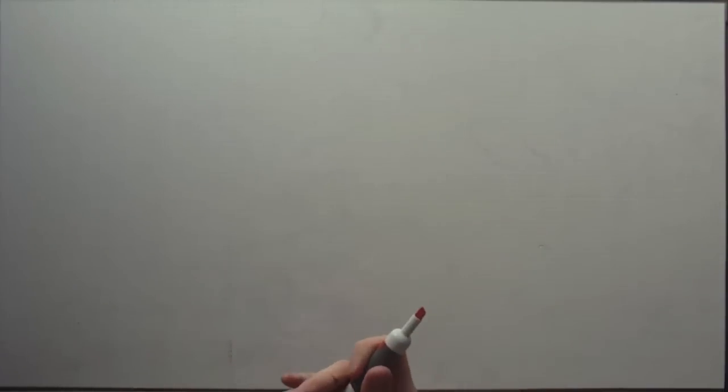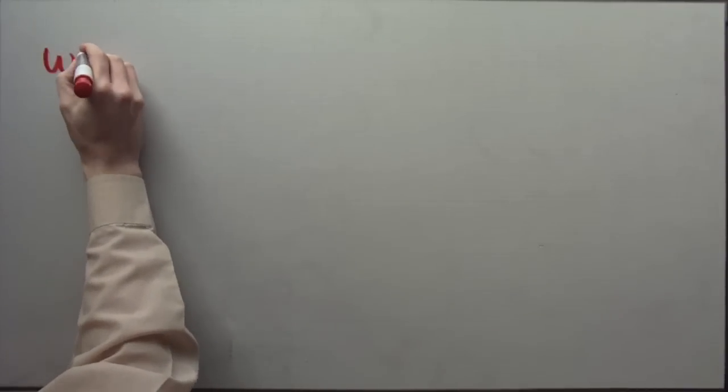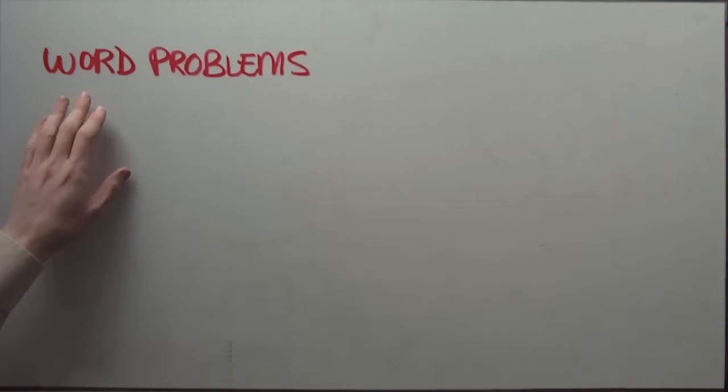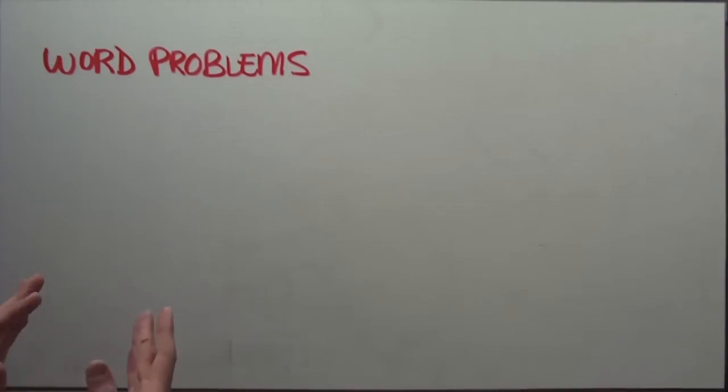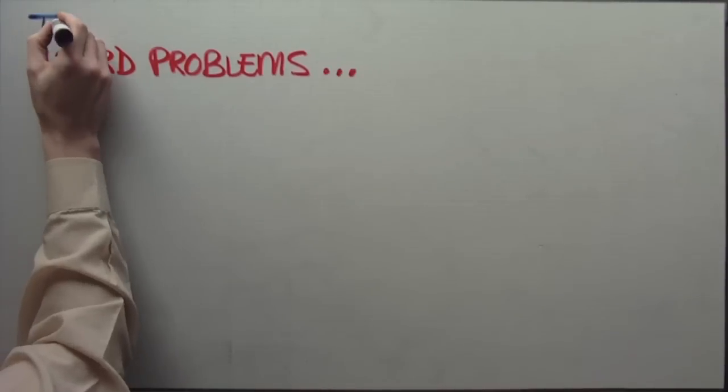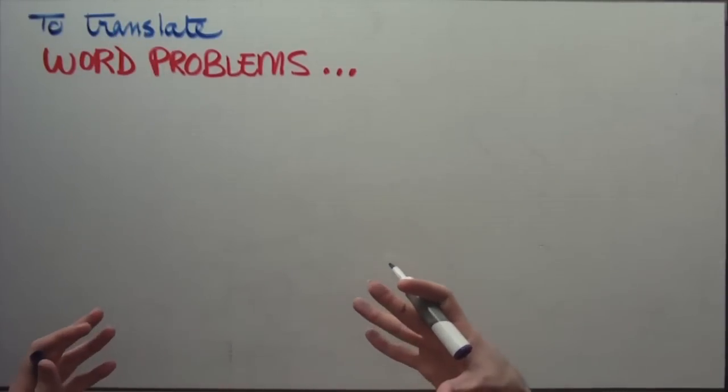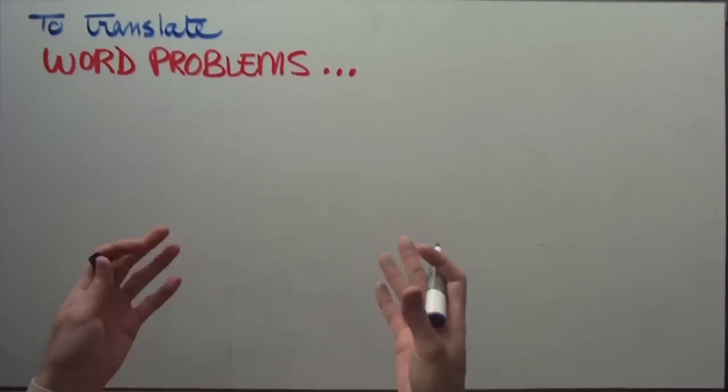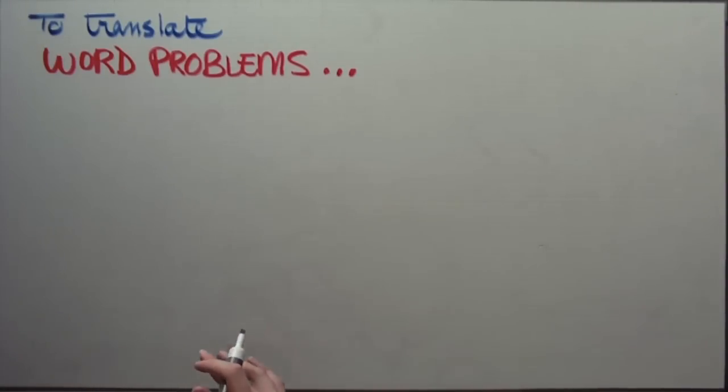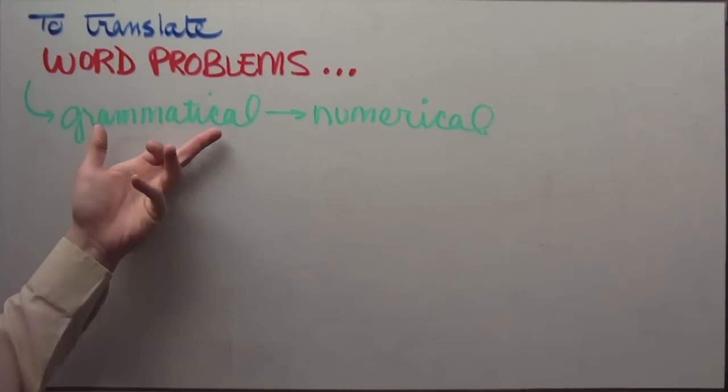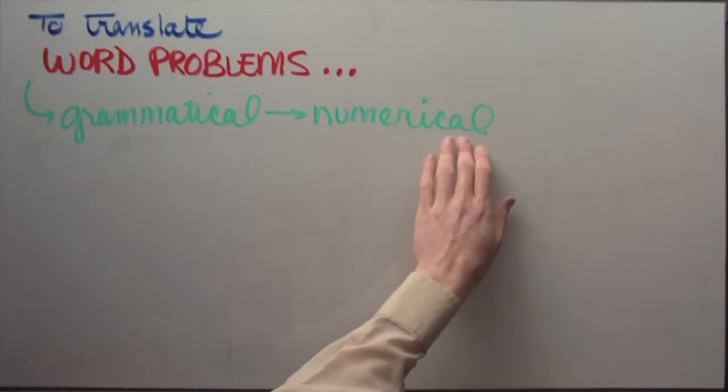For most people, the scariest of the scary things in math is probably translating word problems. The problem people have with translating word problems is that even if they can add, subtract, multiply, or divide, they just don't know when to do those things because they can't pluck them out of a sentence. So to translate requires that you are able to recognize certain suspect phrases that are in whatever sentence is presented to you. When you translate word problems, essentially what you'll be doing is translating something grammatical into something symbolic and numerical.